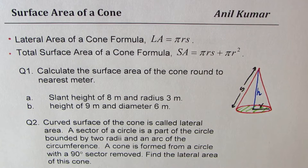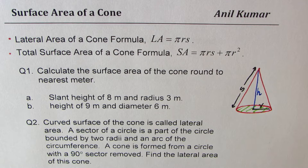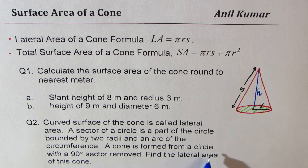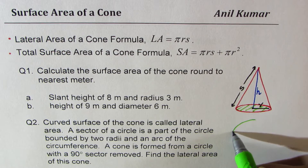Question two: the curved surface of a cone is called lateral area. A sector of a circle is a part of the circle bounded by two radii and an arc of the circumference. A cone is formed from a circle with a 90-degree sector removed. Find the lateral area of this cone.